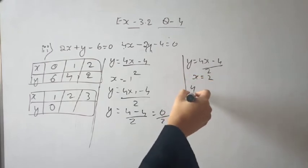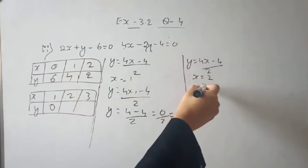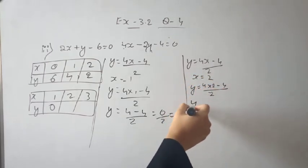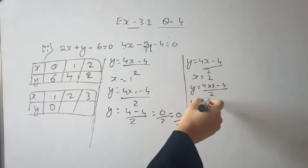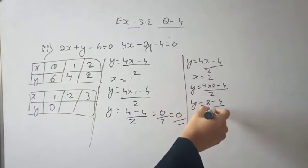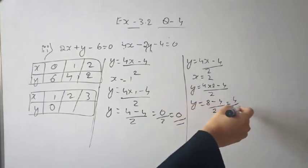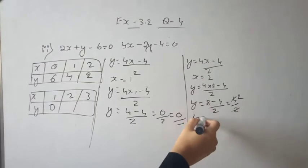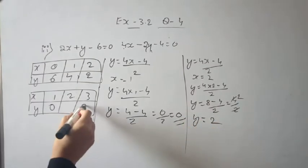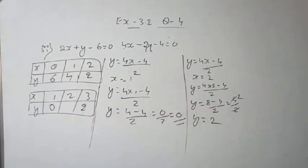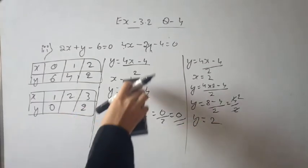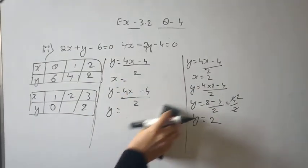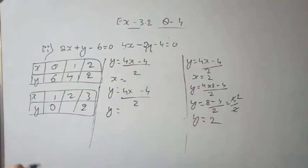When x is equal to 2, y is equal to 4 into 2 minus 4 divided by 2, so y is equal to 8 minus 4 divided by 2, which is 4 by 2, so y is equal to 2. So x value 2 gives y value 2.